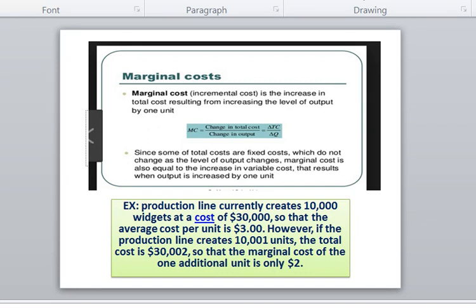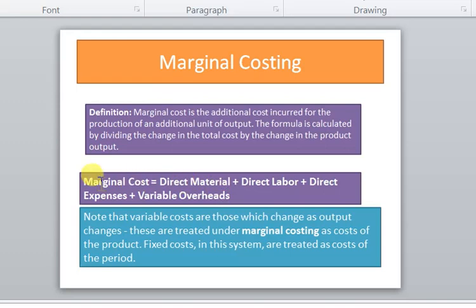If one unit increases, the additional cost also increases, and that is variable cost. Marginal cost is a variable cost. The marginal production cost of an item is the sum of direct material cost, direct labor cost, direct expenses and variable production overhead cost. As the volume of production and sales increases, total variable cost rises proportionately. Marginal cost equals direct material, direct labor, direct expenses plus variable overheads. These are all variable costs.